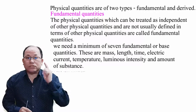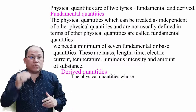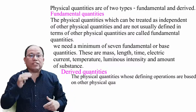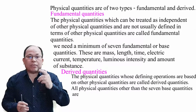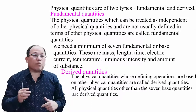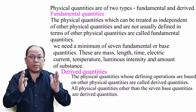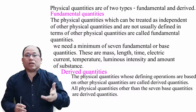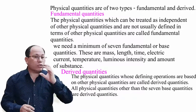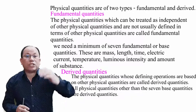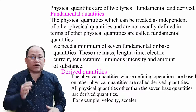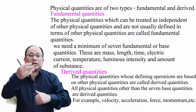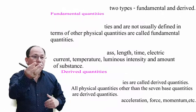Next are derived quantities. The physical quantities whose defining operations are based on other physical quantities are called derived quantities. These are derived from fundamental quantities. Examples include velocity, acceleration, force, and momentum.